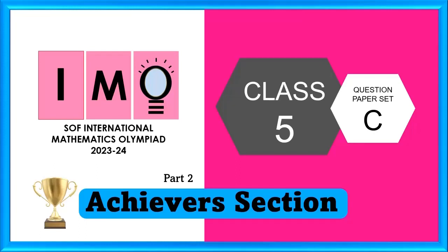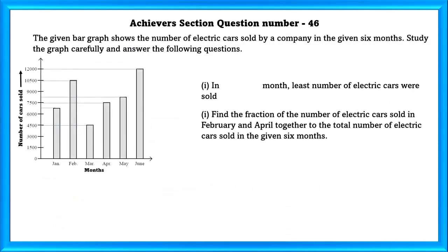Class 5 SOF IMO set C Achiever section. Achiever section question number 46. The given bar graph shows the number of electric cars sold by a company in the given 6 months. Study the graph carefully and answer the following questions. First question.